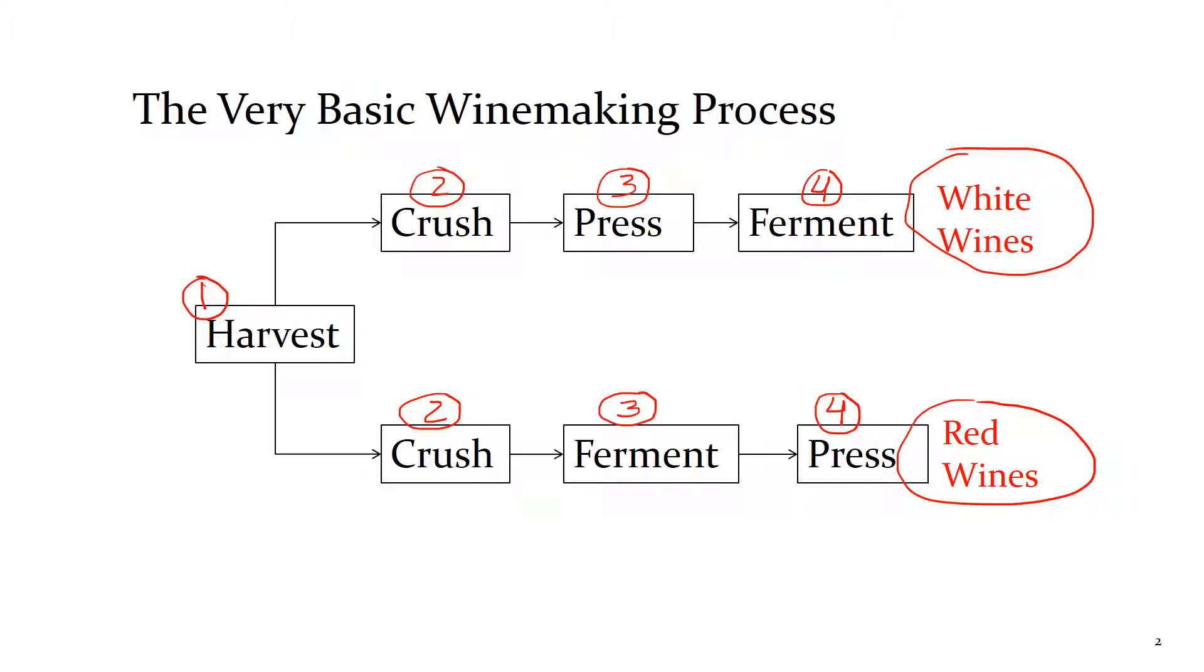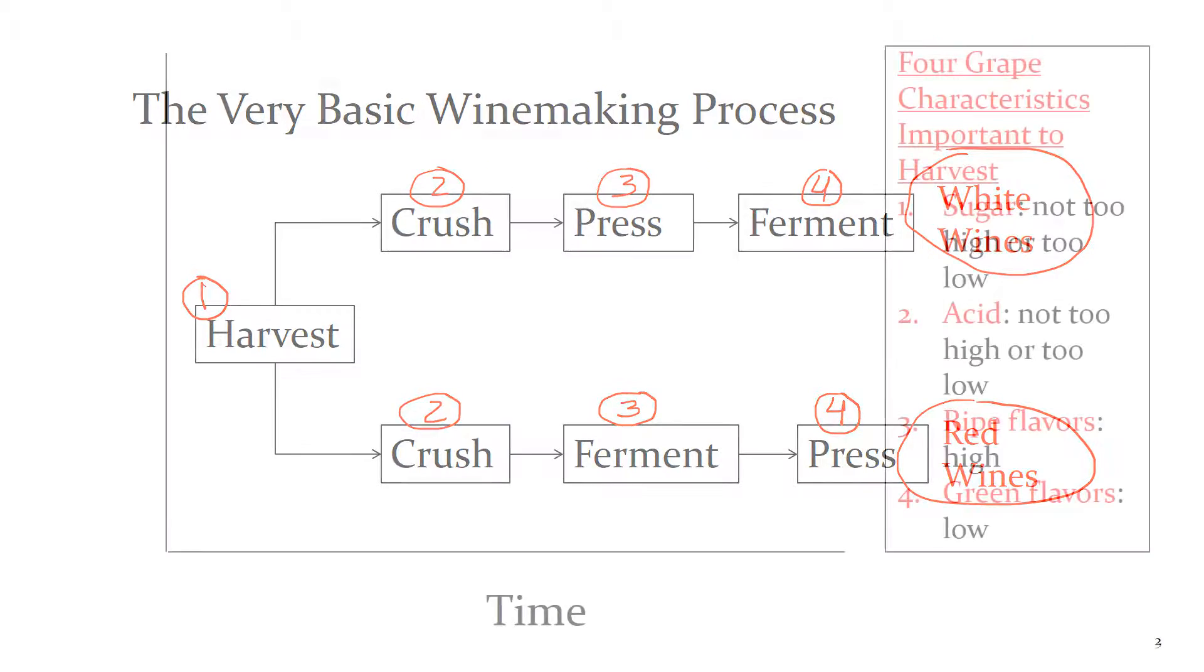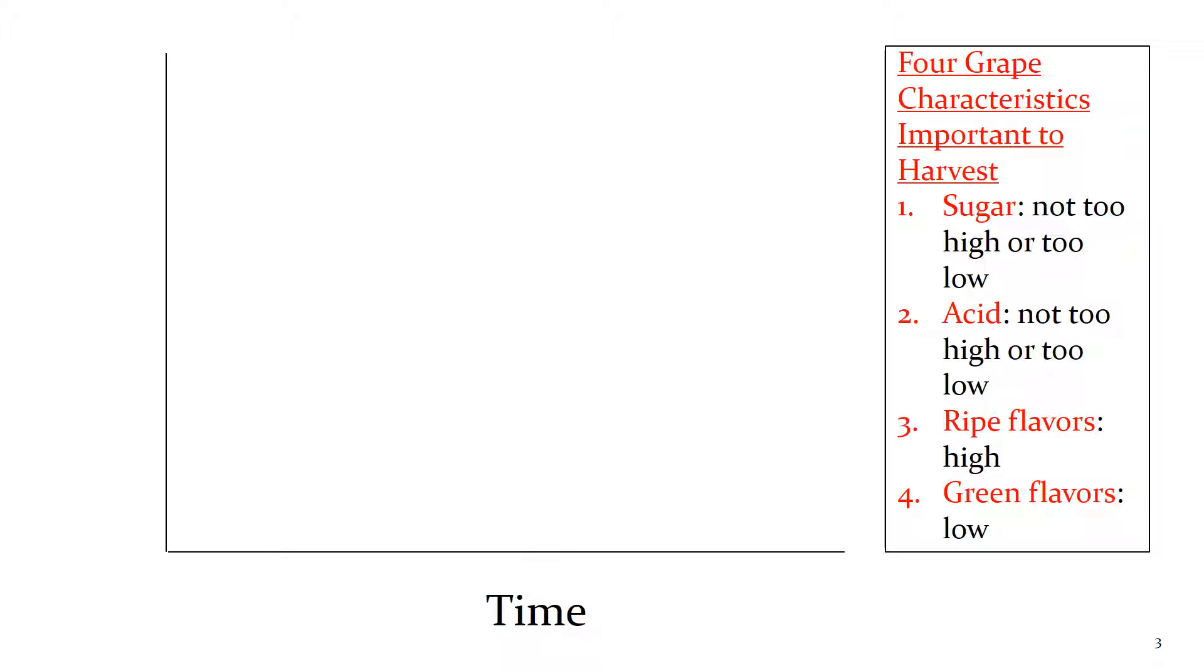So in each of these four steps, winemakers have a series of choices. And today we're going to talk about the choices that are involved at harvest. There are four grape characteristics important to harvest: sugar, acid, ripe flavors, and green flavors. Sugar, you want that not too high but not too low at harvest.